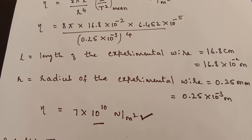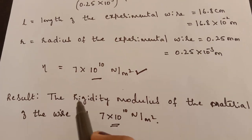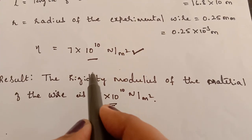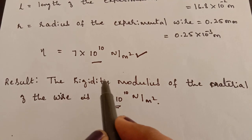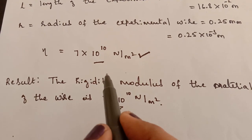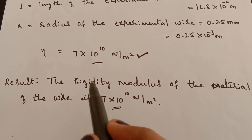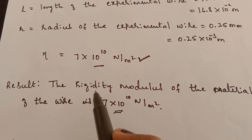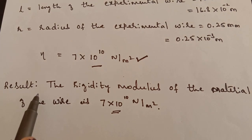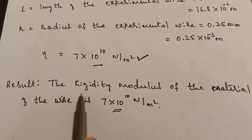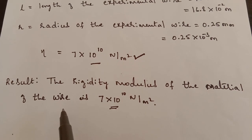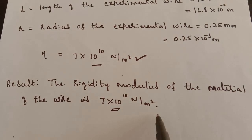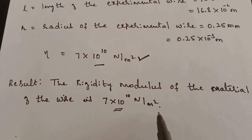This is how we calculate the rigidity modulus of the experimental wire and the moment of inertia of the body by setting up torsional oscillations using a torsional pendulum. The result is: the rigidity modulus of the material of the wire is 7 × 10¹⁰ N/m². Thank you.